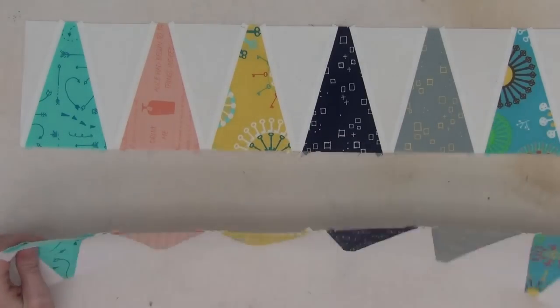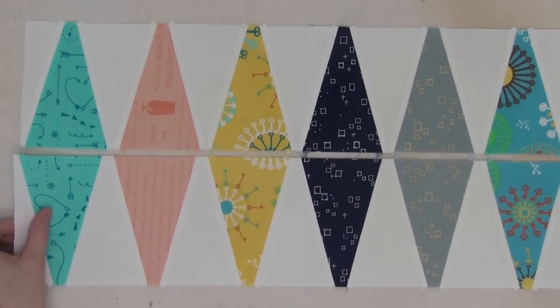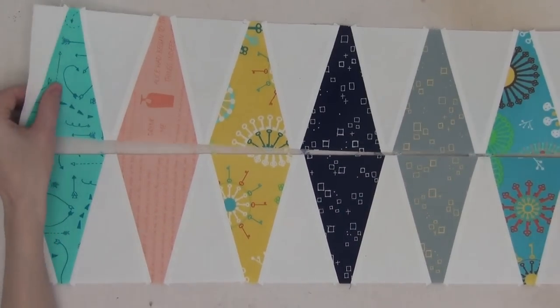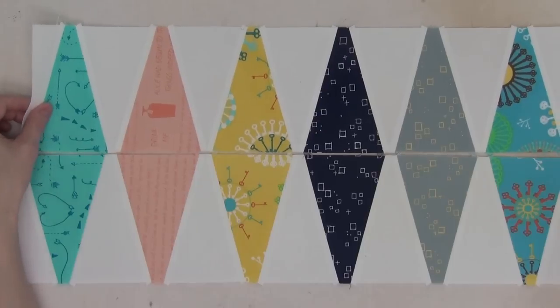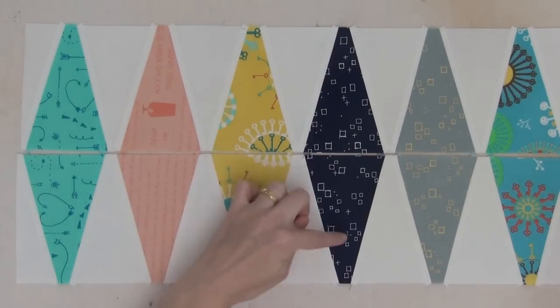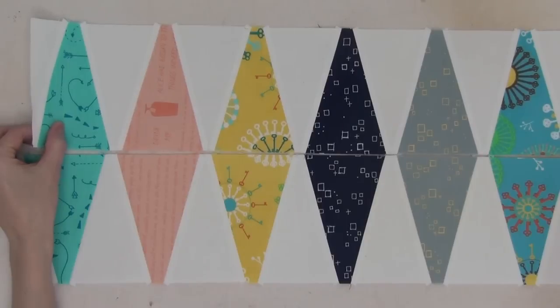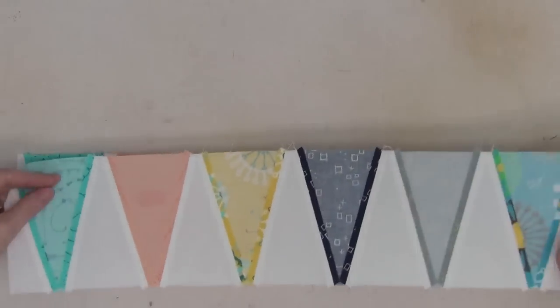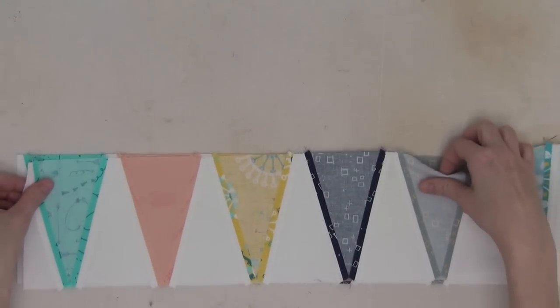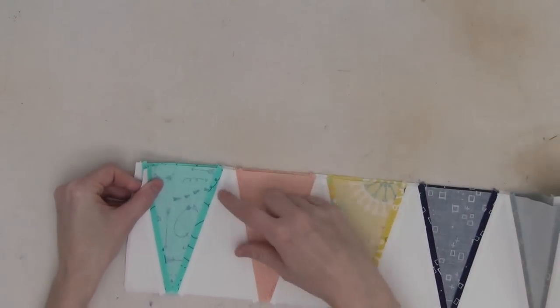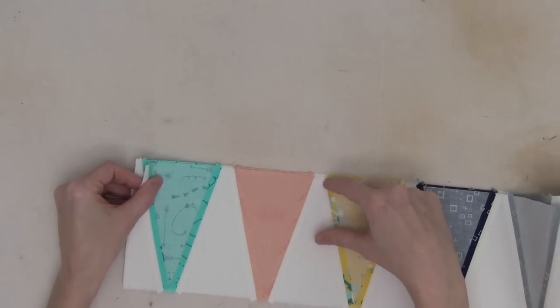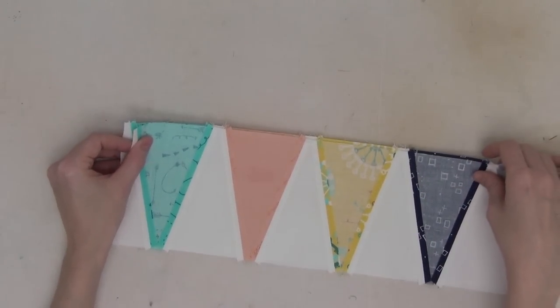So I've put together this row and pressed all of those seam allowances open. And now you can see I've also pieced the corresponding row because we are creating these diamond shapes of these colors. So it makes sense to piece this in sets of two rows. So I'm going to take the top one, flip it over. We're going to take it to the machine. And as we piece, we will work to match up these seams so we form really nice diamond shapes.